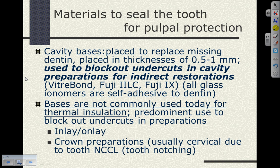Cavity bases are used to replace missing dentin — dentin replacement materials — placed thicker than half a millimeter, from half a millimeter to one millimeter. Typically we use them to block out undercuts in cavity preparations when doing inlays or crowns. We can use Vitrobond (a resin-modified glass ionomer base and liner), Fuji 2 LC (a resin-modified glass ionomer restorative), or Fuji 9 (a conventional glass ionomer restorative). All glass ionomers are self-adhesive to dentin. In the United States, bases are not commonly used today for thermal insulation — their predominant use is to block out undercuts for inlays, onlays, and crowns.